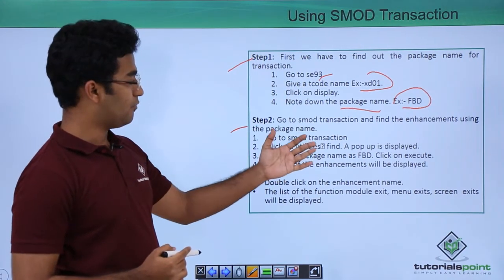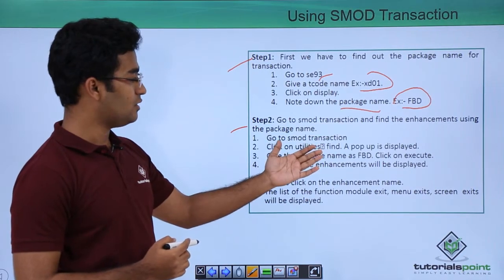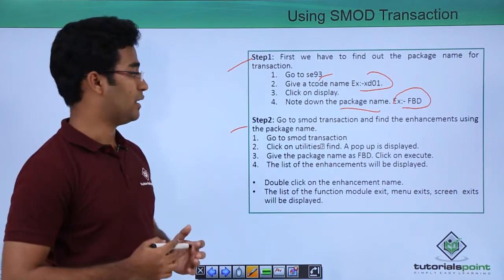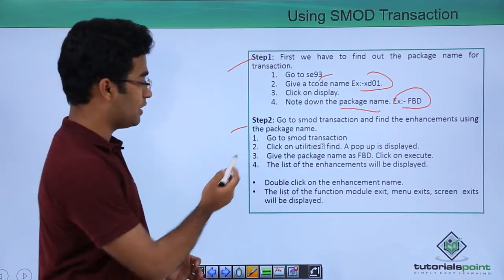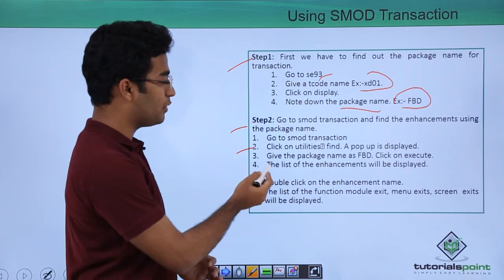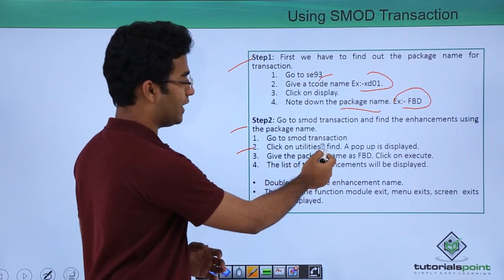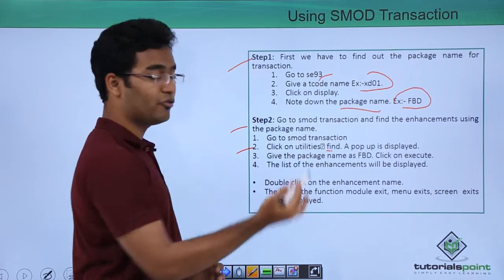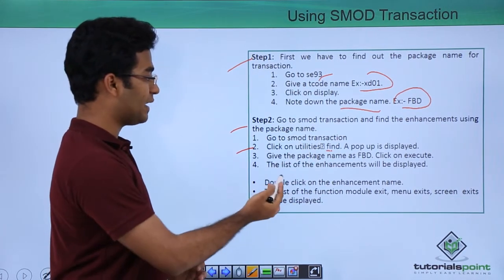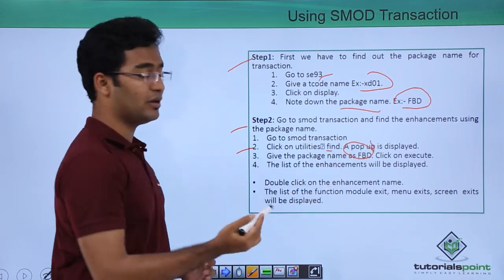In the second step, we have to go to SMOD transaction and find the enhancement name. In the SMOD transaction, click on Utilities and click on Find — a pop-up would be displayed. Give the package name as FBD and click on Execute.